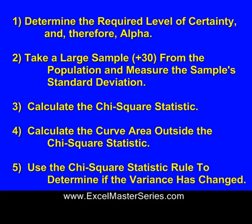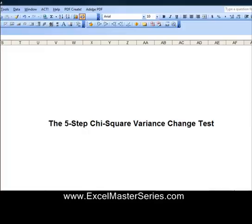The fourth step, you calculate the curve area outside that Chi-Square Statistic — we're dealing with the Chi-Square Distribution Curve — and we're calculating the percentage of the curve area that falls outside of that Chi-Square Statistic on the x-axis. The fifth step, you use what's called the Chi-Square Statistic Rule to determine whether or not the variance has changed. It's actually a pretty simple test, and we'll walk you right through it and then do a real problem.